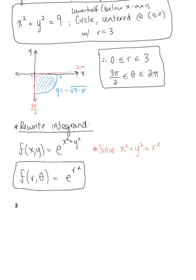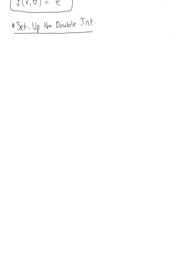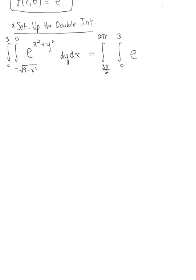We're now ready to set up the double integral in polar coordinates. We were given the integral from 0 to 3, the integral from minus the square root of 9 minus x squared to 0, of e to the x squared plus y squared, dy dx. Converting to polar: the outer bounds on theta are 3π/2 to 2π, the inner bounds on r are 0 to 3, the integrand is e to the r squared, and the differential is r dr dθ.